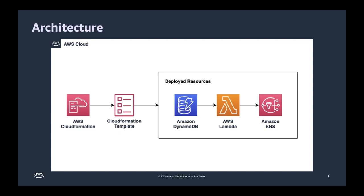Amazon DynamoDB is a NoSQL database service. AWS Lambda is our event-driven serverless computing platform, and Amazon SNS is our notification service which sends notifications between systems, microservices, and event-driven serverless applications. In our case we have a serverless pattern, so this matches what we have on screen.